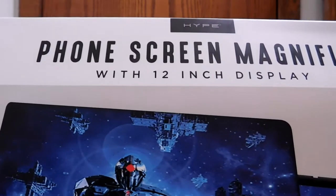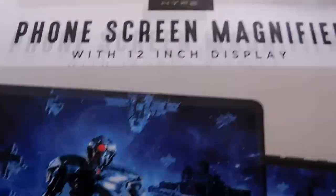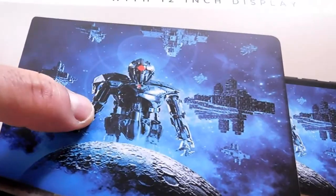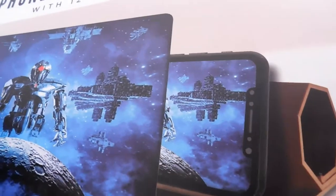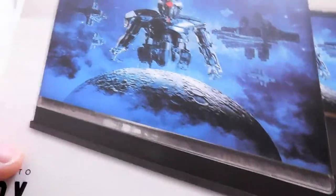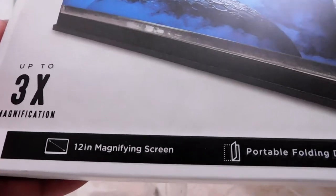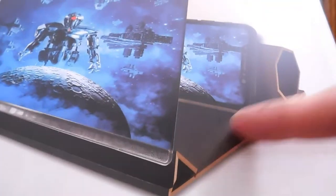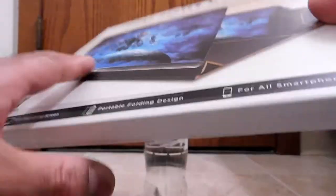Let's take a look around the package here. Phone screen magnifier, we've seen that, real big, tells you what it is, Hype, the brand up there. I don't believe this is the mascot for the Hype company, I guess this is just a representation of something you might be doing on your smartphone. Down here, we see it can go up to 3x magnification, there we have the 12-inch diagonal screen, portable folding design, and it's for all smartphones.